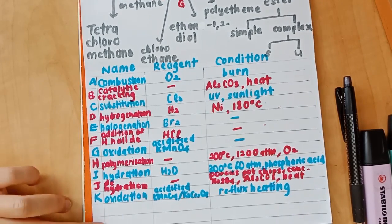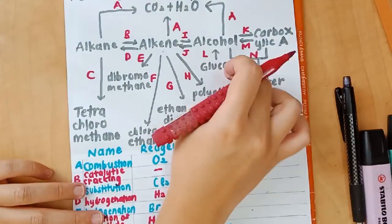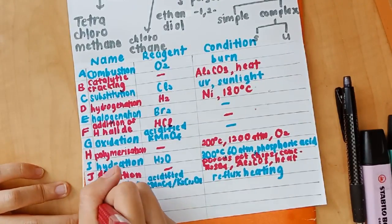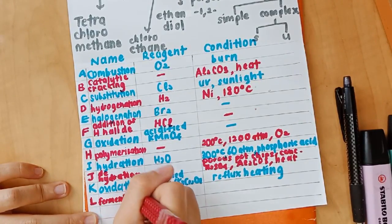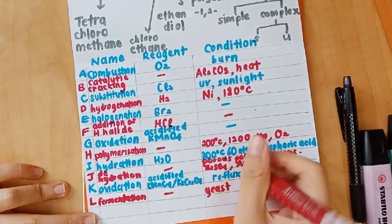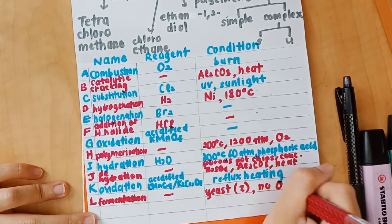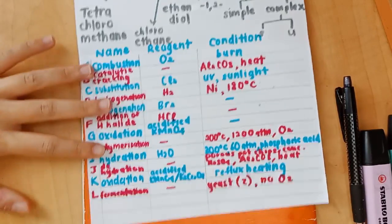The condition is reflux heating. And then L is from glucose to alcohol. The reaction name is fermentation. No reagent is needed. The conditions are yeast, saccharomyces cerevisiae, and no O2.